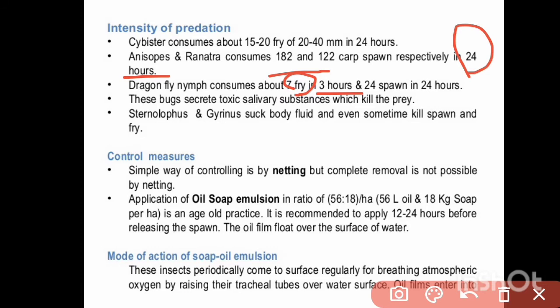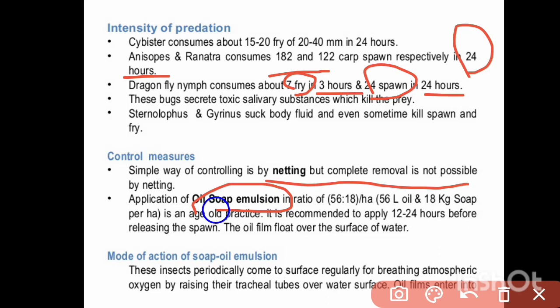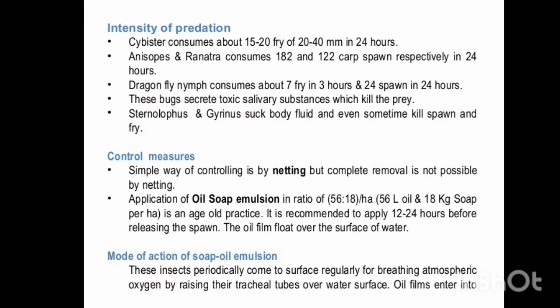These bugs secrete toxic salivary substances which kill the prey. For control measures, the simple way is by netting, but complete removal is not possible by netting. Application of oil-soap emulsion in the ratio of 56:18 — meaning 56 litres of oil and 18 kg of soap per hectare — is used in practice.